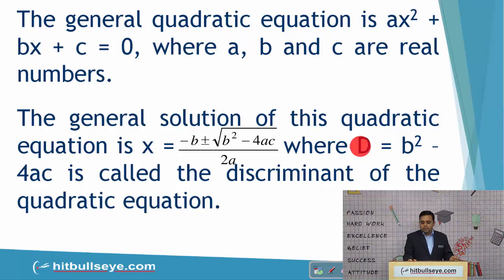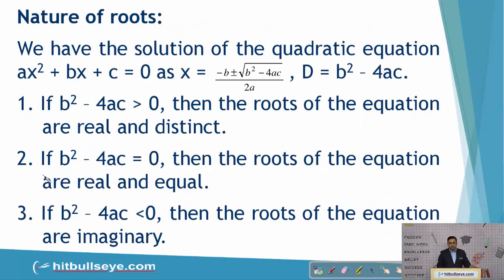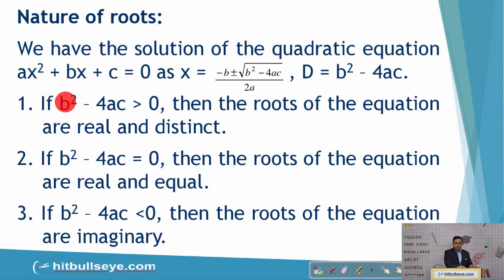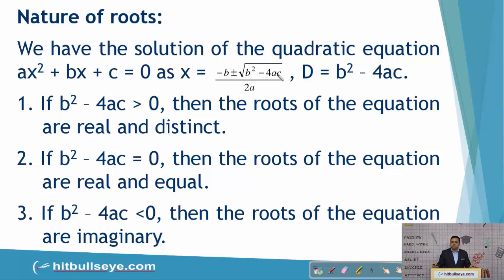As we discussed, D = b² − 4ac is the discriminant. Based on this discriminant, we have the nature of the roots. The first case is when the discriminant is positive. If the discriminant is positive, that means the square root of this discriminant will be a real number, as the square root of positive numbers is always a real number. So −b is already a real number, and 2a is real.